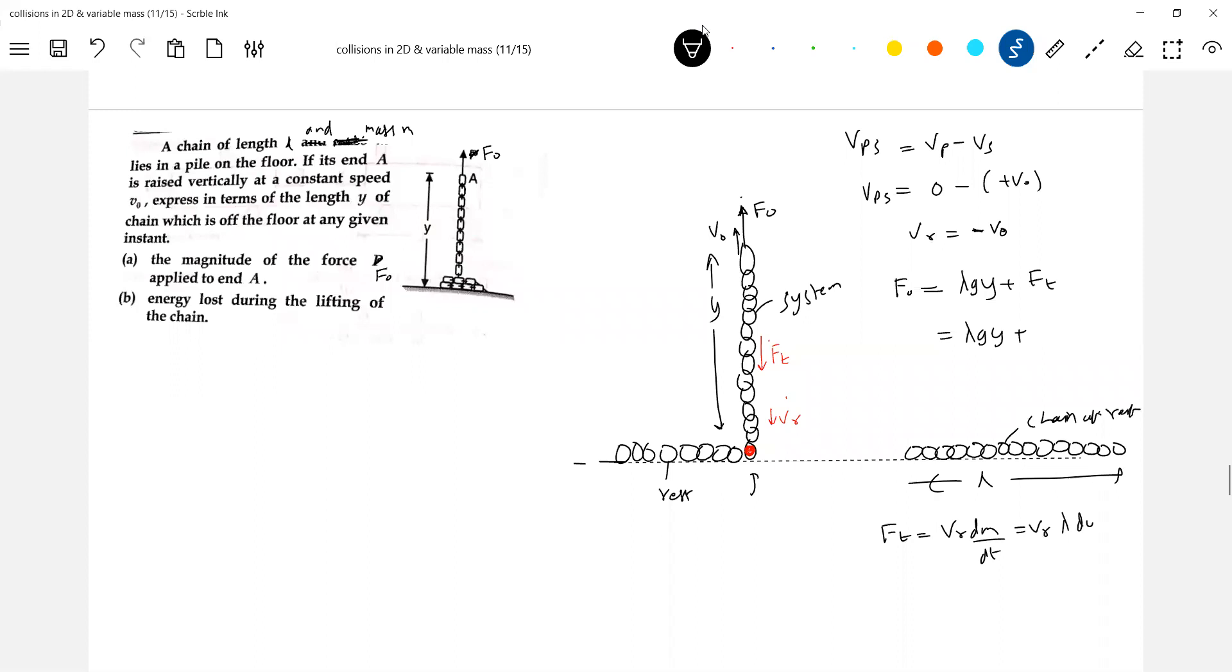DM what you can write? Lambda into dy by dt. And VR equal to V₀. dy by dt should be V₀. So, λV₀².